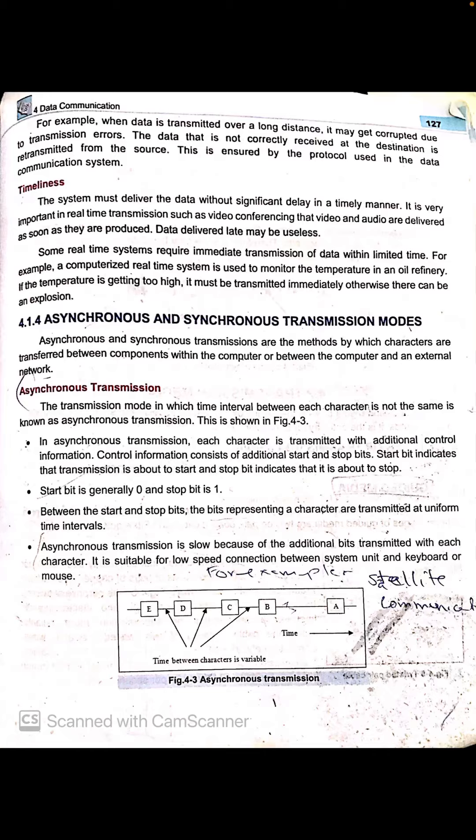The transmission mode in which the time interval between each character is not the same is known as asynchronous. If you look at the diagram, you will see that the characters are written E, D, C, B, and A. You can see the gap — that is called the time interval — and it is not the same. One character sends after one second, another after two seconds, another after half a second. So the time interval between characters is not the same in asynchronous transmission.